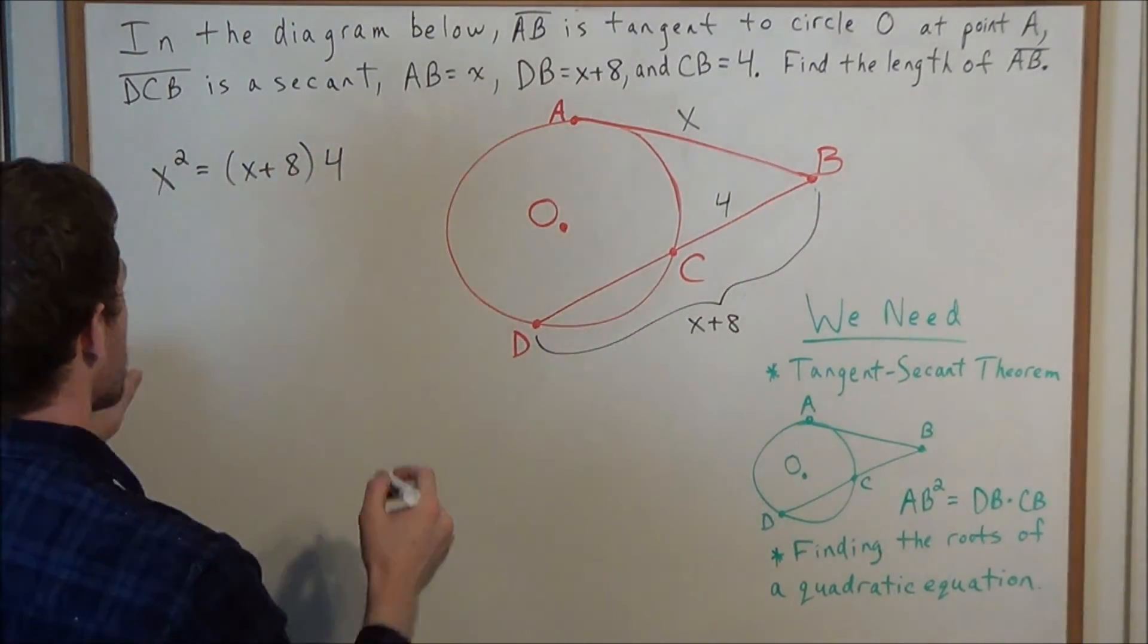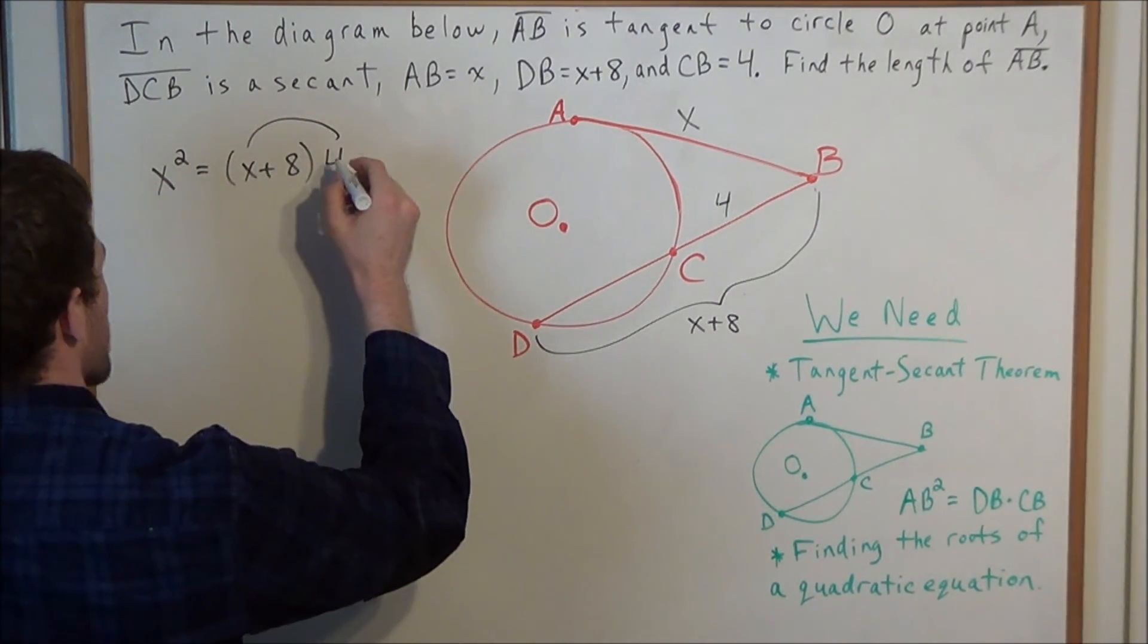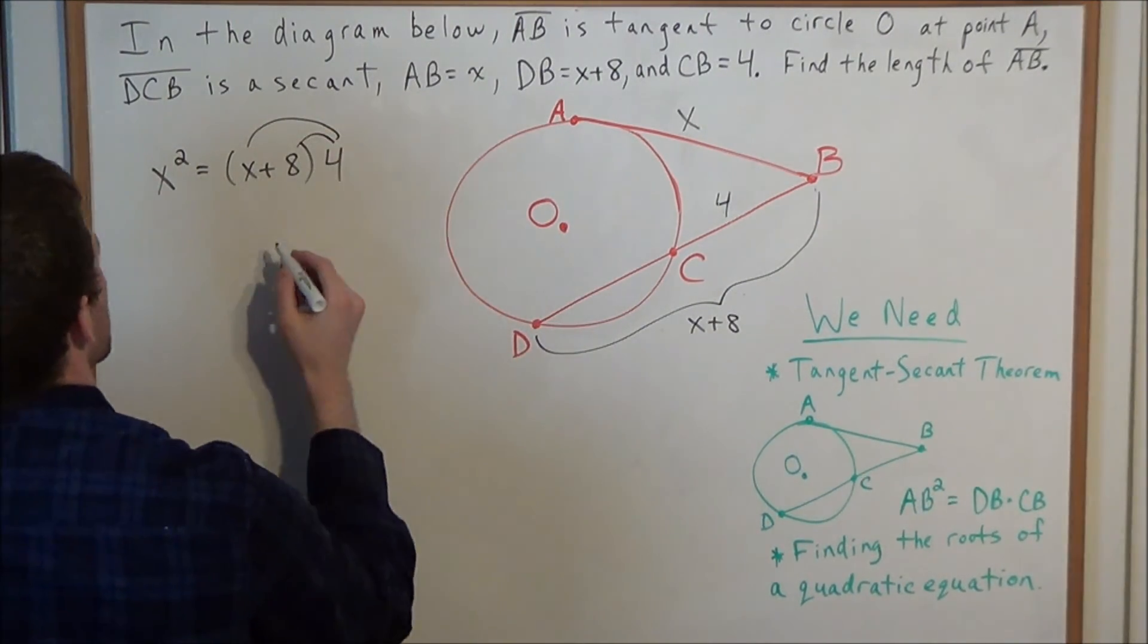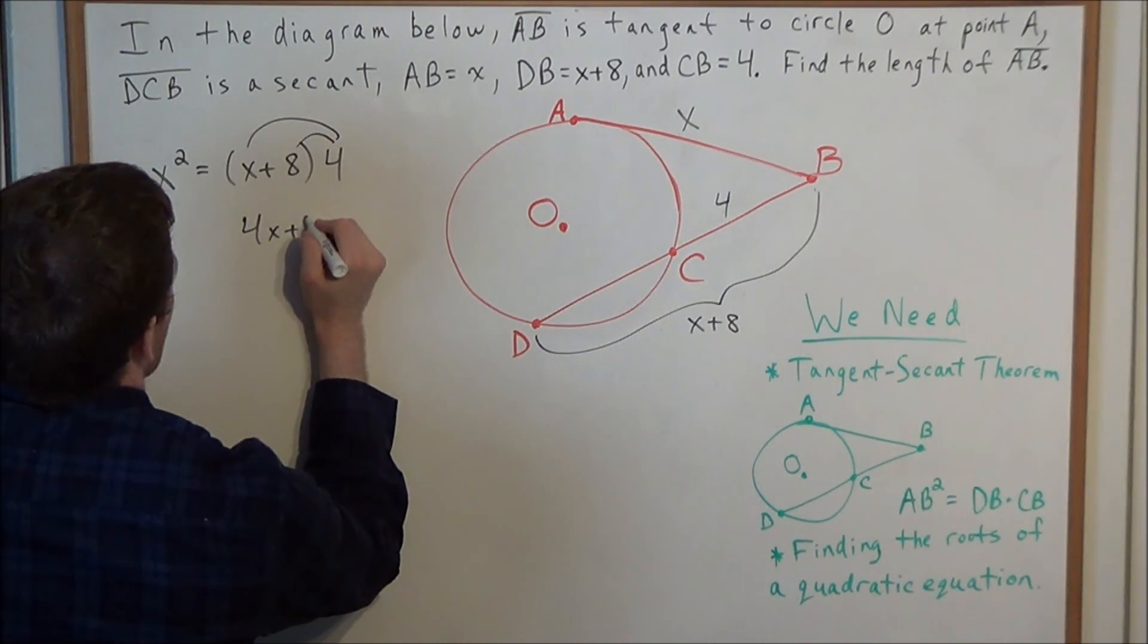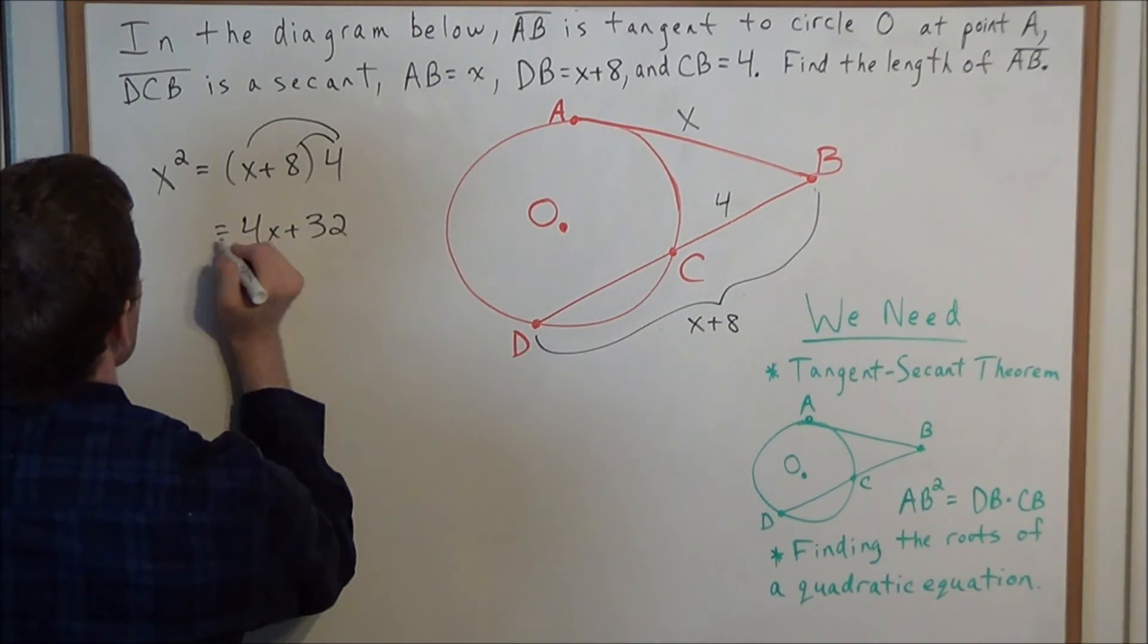So now we need to distribute, we have 4 times X plus 4 times 8, so we have 4X plus 4 times 8 is 32 equals X squared.